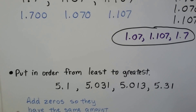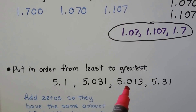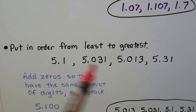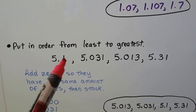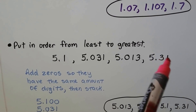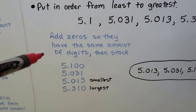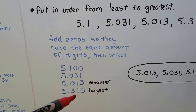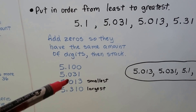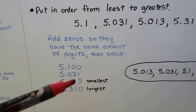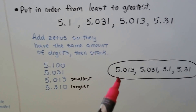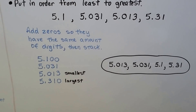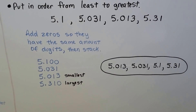Let's put these in order from least to greatest. The most digits to the right of the decimal is 3, so we need to give them all three digits. We add zeros so they have the same amount of digits, then we stack them. Now we can compare them — we can see which is the largest and which is the smallest. It would be like comparing 100 to 31 to 13 to 310. Stacking them and adding the zeros can really help our eyes see the correct order.